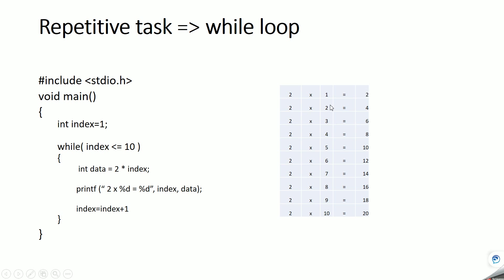Inside the loop, we calculate data = 2 * index. Initially index is 1, so data becomes 2. We print it in the format '2 x %d = %d', where the first %d gets the value of index and the second gets the value of data. So it prints '2 x 1 = 2'.